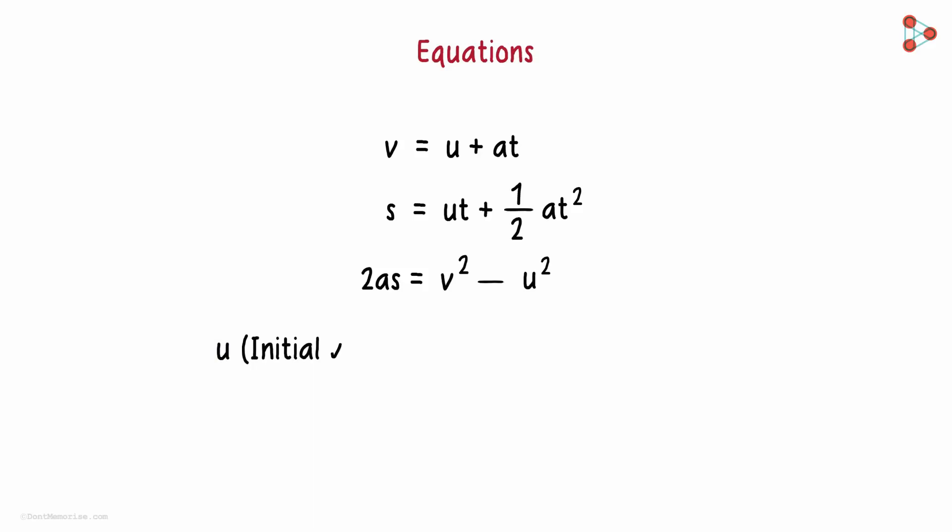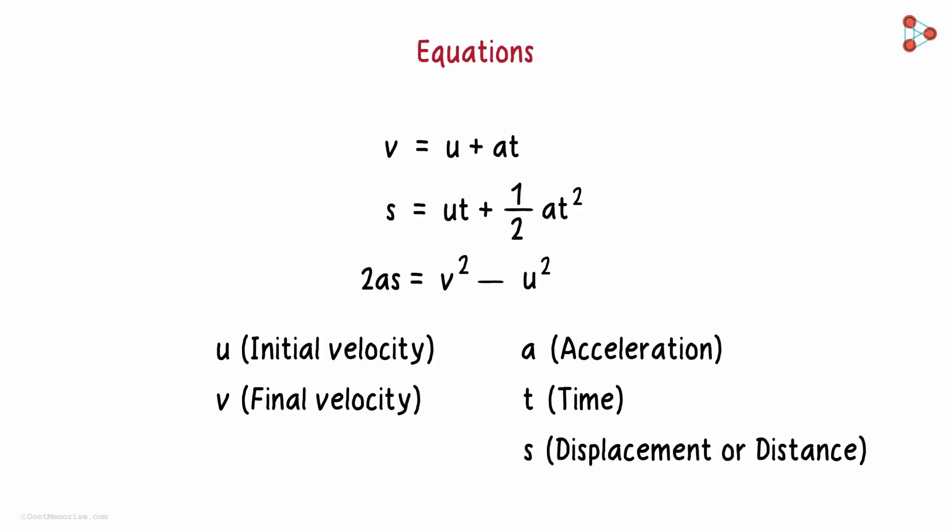We will use U to denote initial velocity, V to denote final velocity, A for acceleration, T for time, and S for displacement or distance. Together these three are called equations of motion.